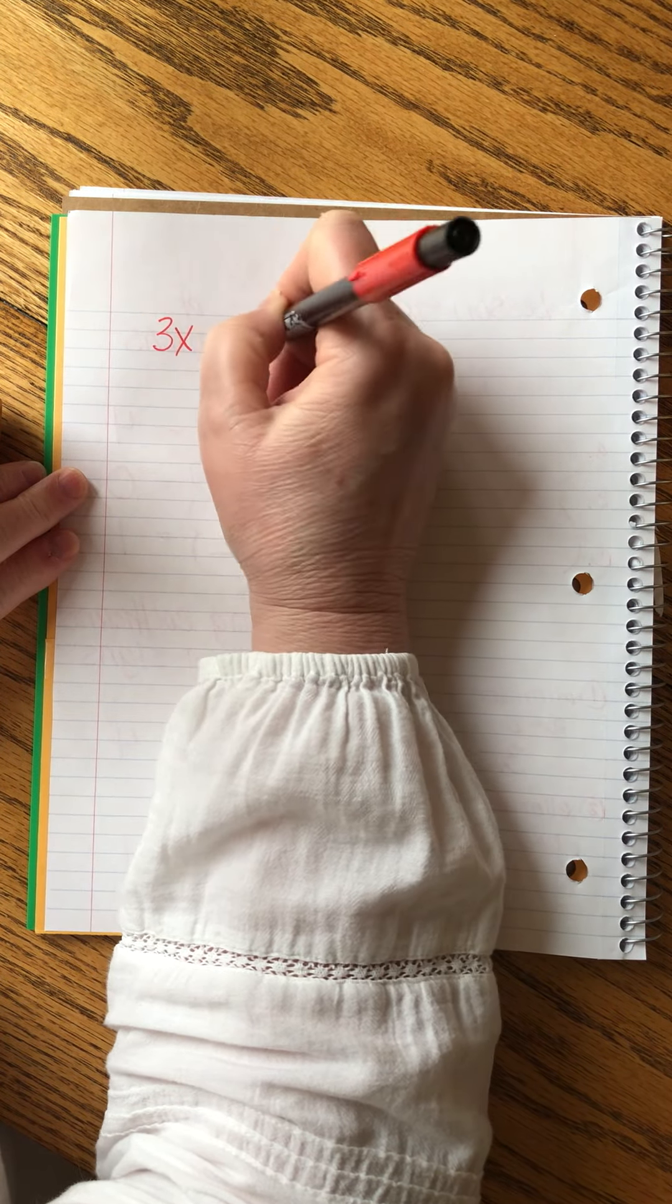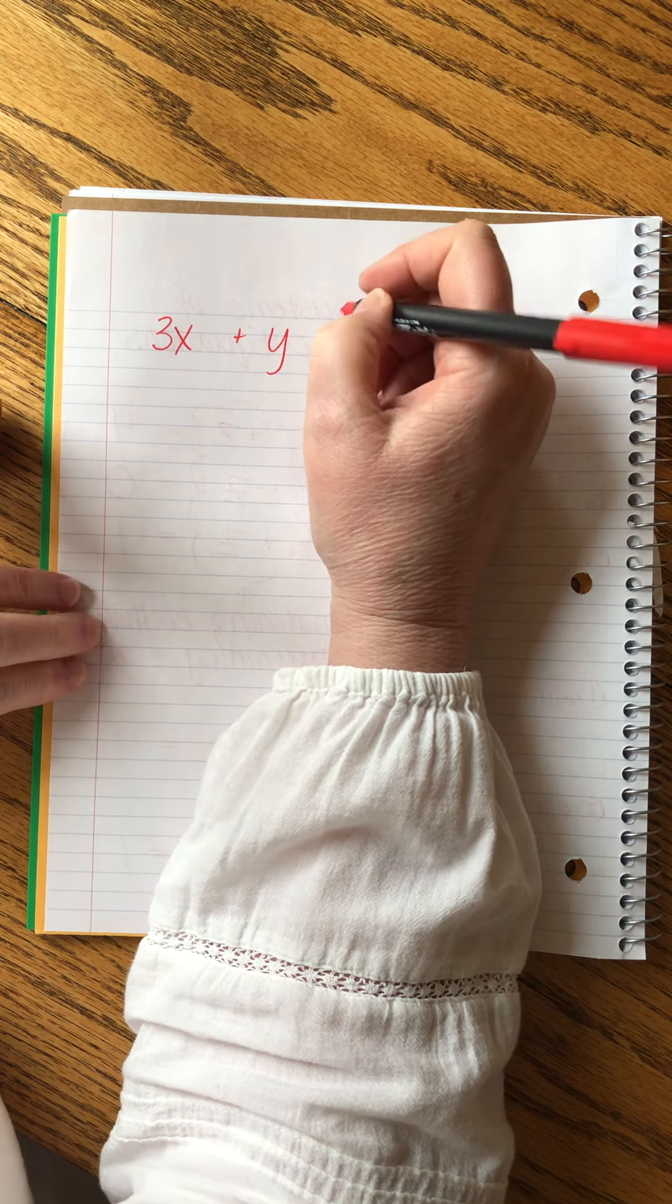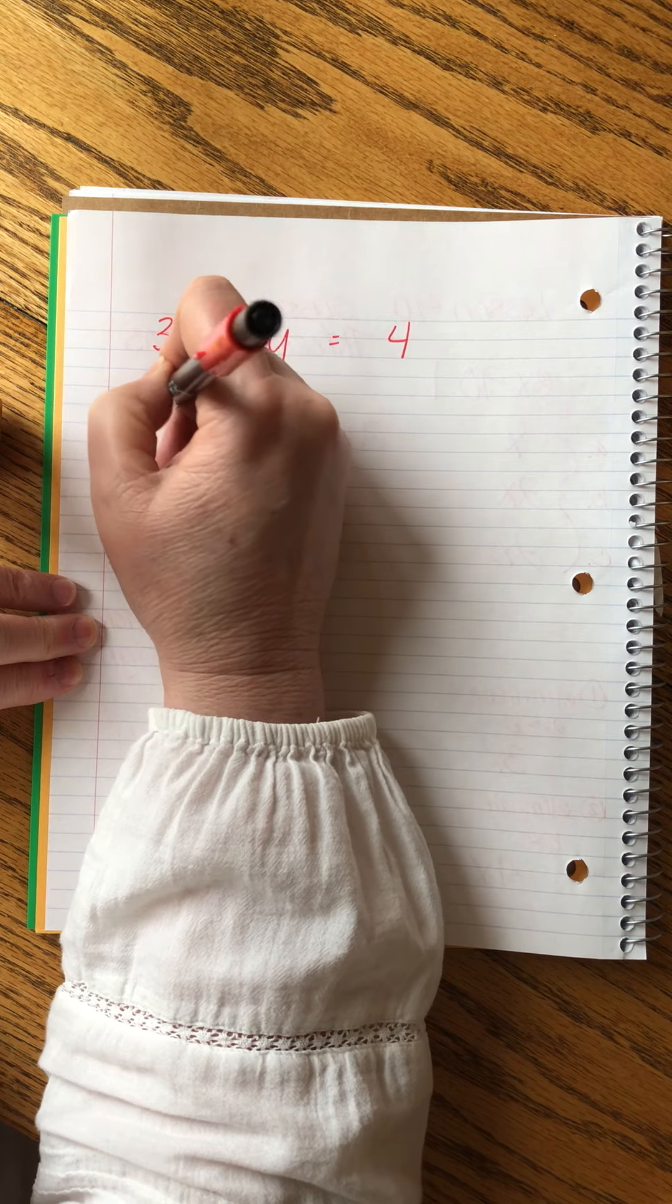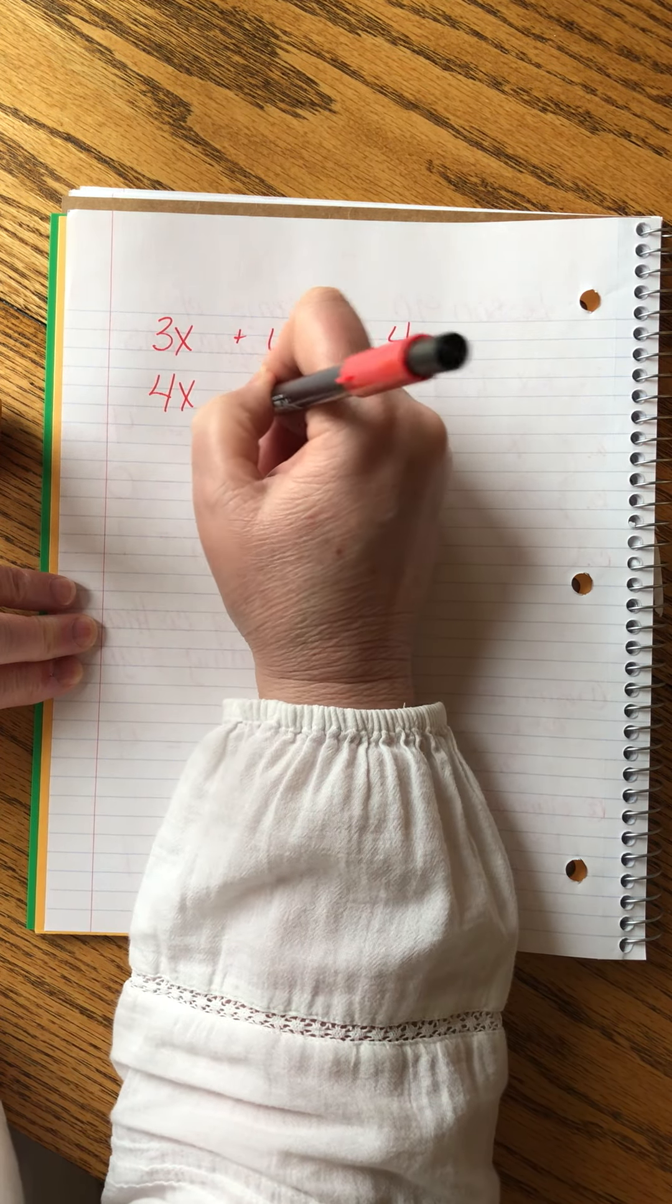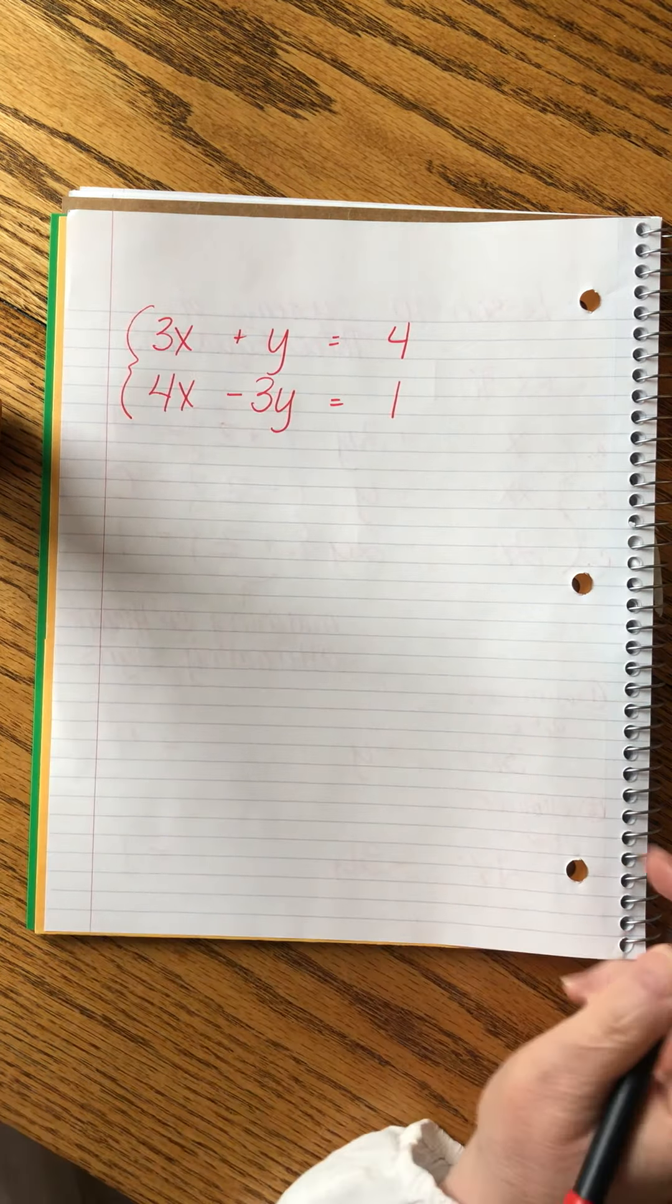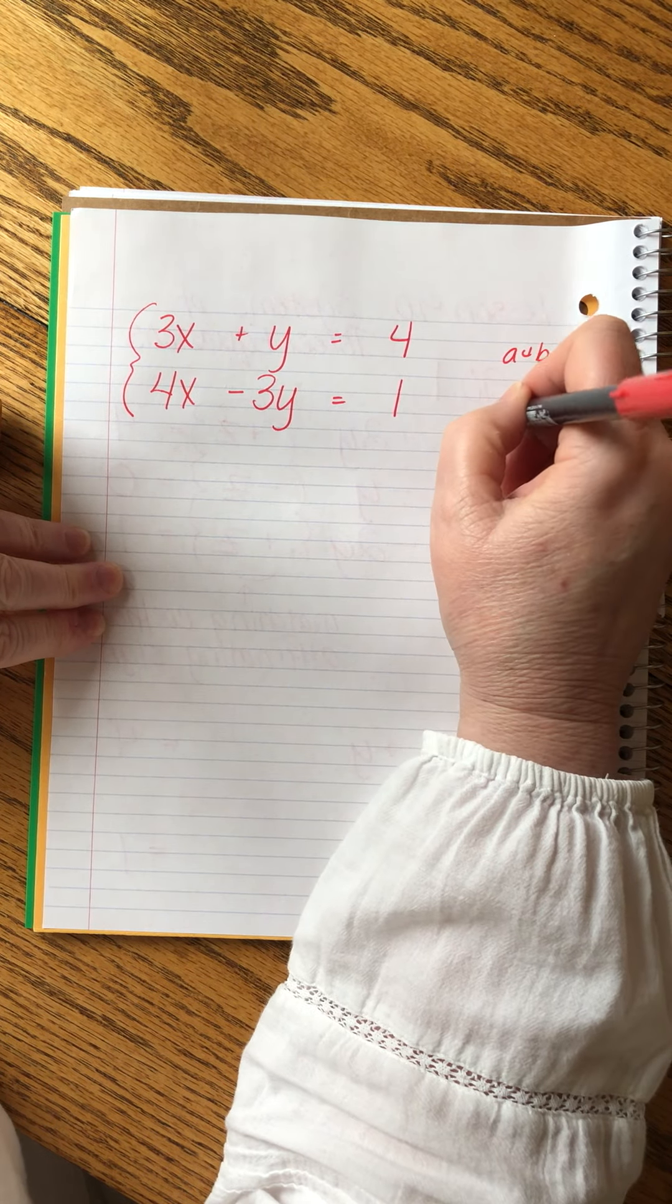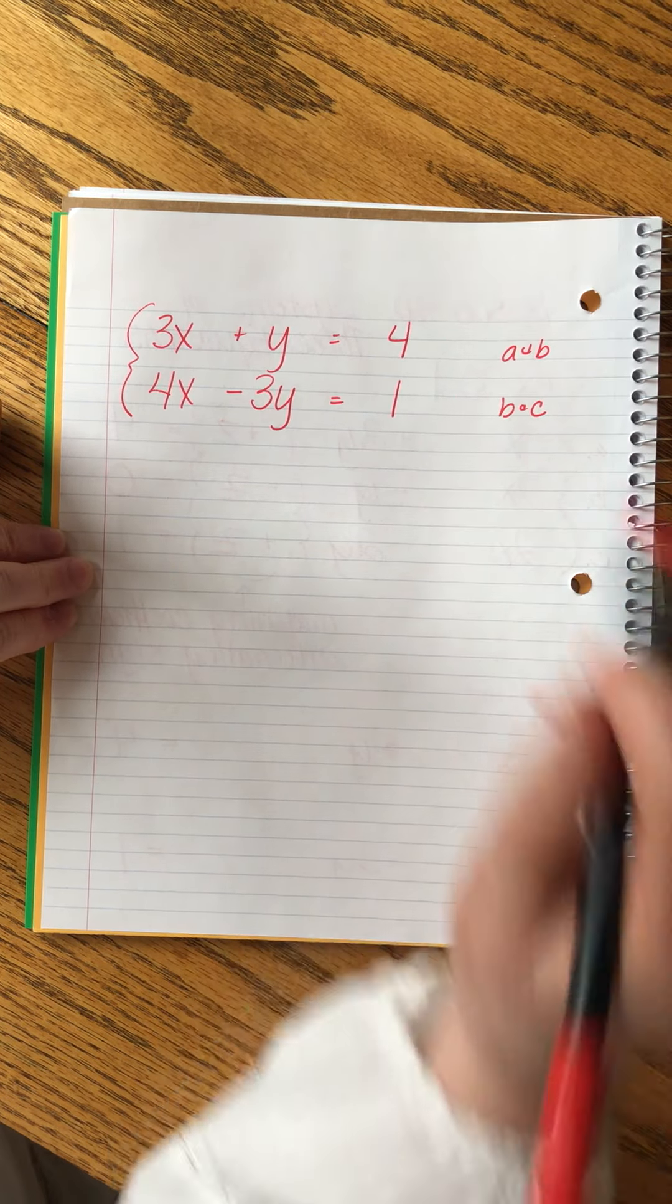So this is what we had. You don't have to recopy it. I do. 3x plus y equals four. And then 4x minus 3y equals one. So this is our new system. This is what we got when we added A and B. This was B and C. Now I'm ready to eliminate these.